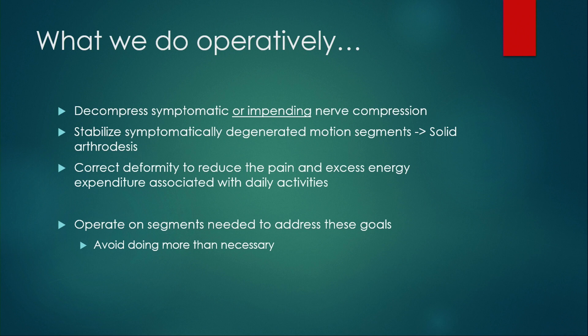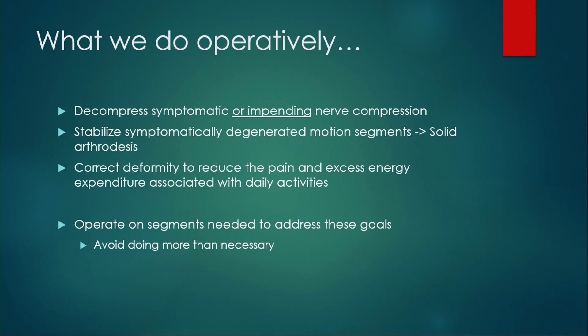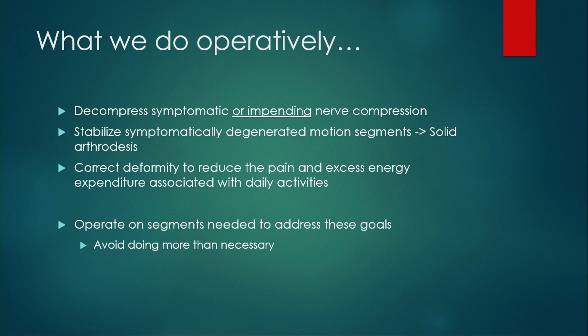Operatively, we decompress symptomatic or impending nerve root compression — critically important when thinking about sagittal realignments, since patients can have asymptomatic stenosis, and inducing more lordosis can cause nerve compression. We stabilize symptomatically degenerated motion segments with solid arthrodesis, correct deformity to reduce pain and excess energy expenditure — getting back to the cone of economy concept — and hopefully operate only on segments needed to address those goals.